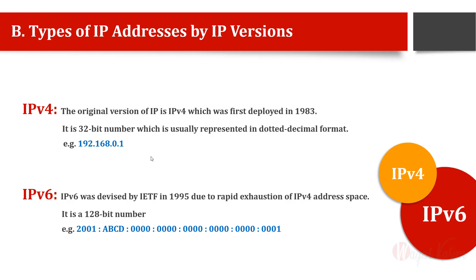We found that IPv4 addresses were finishing because it is a 32-bit number, which means 2 raised to the power of 32 — approximately 4.3 billion IP addresses — and they are finishing very quickly in the modern world where we have so many mobile phones, smart TVs, smart cars, and Internet of Things devices. So 4.3 billion or a 32-bit address space is not enough, and we are slowly moving to IPv6, which is a 128-bit IP address written in hexadecimal notation.